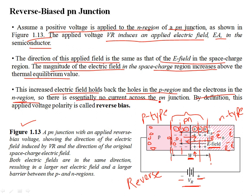There is essentially no current across the PN junction. When the PN junction is reverse biased, the current is zero — we don't have any flow of current across the junction. Since there are no charge carriers flowing from one region to another, by definition this applied voltage polarity is reverse bias.